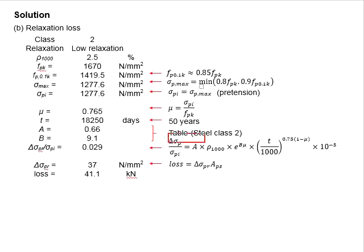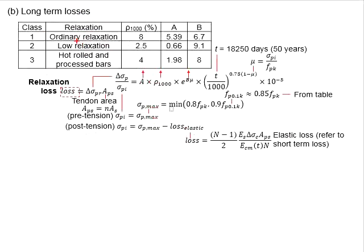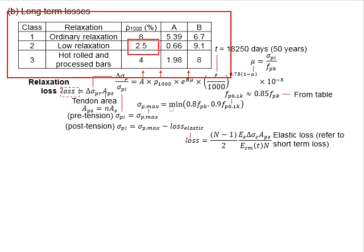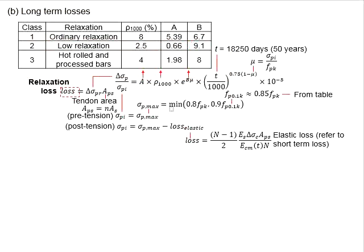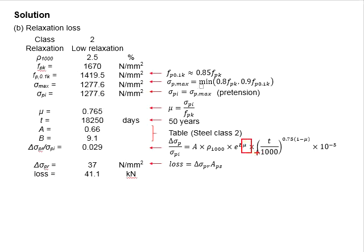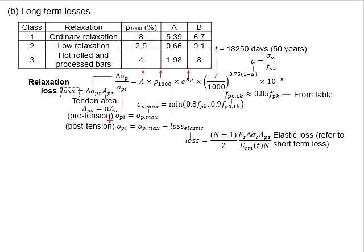Therefore, we are going to compute this delta_sigma_p. It is given that the steel is class 2. Referring to the table here, you get your rho_1000, A, and B as the values given here. You will need to determine the mu here. The mu here is calculated from the ratio of sigma_pi per its characteristic ultimate strength. The sigma_pi will need to refer to the equation here. As it is given that it is a pretensioned member, the sigma_pi will be equal to this.